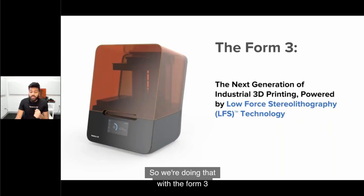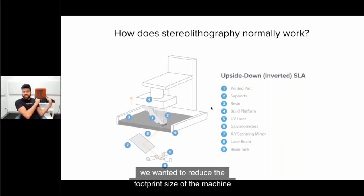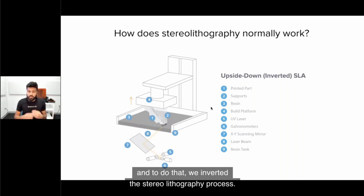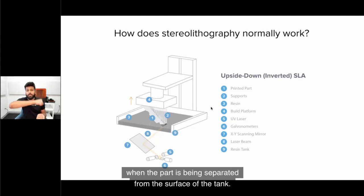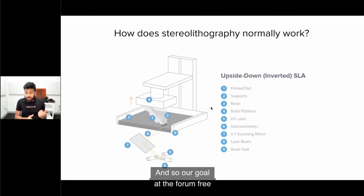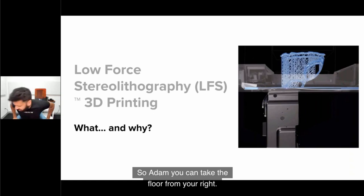This speaks to our mission statement: we're expanding access to digital fabrication so anyone can make anything. We're doing that with the Form 3, the next generation of industrial 3D printing powered by low-force stereolithography. We inverted the stereolithography process, which introduced peel forces. Our goal with the Form 3 was to reduce those peel forces. I'm going to invite Adam back to go into low-force stereolithography.